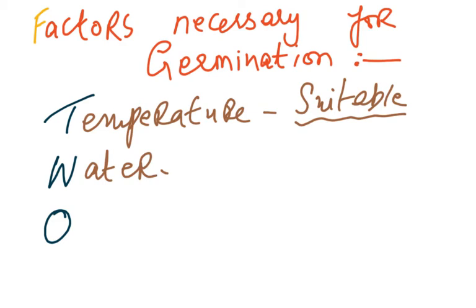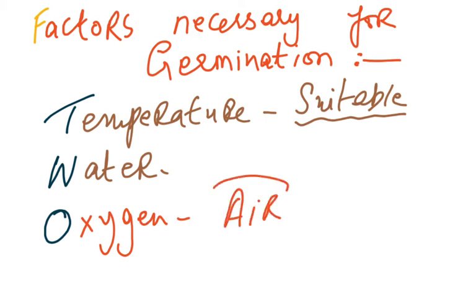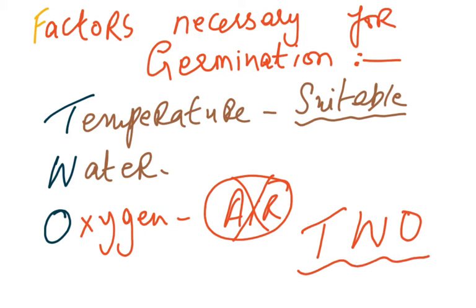The second condition is water — not just moisture, but water. Water is needed to mobilize enzymes because all enzyme reactions need a watery medium. The third and most important condition is oxygen. Do not write 'air' because air includes all other gases; we only want oxygen. So the mnemonic TWO covers Temperature, Water, and Oxygen — the three factors necessary for germination.